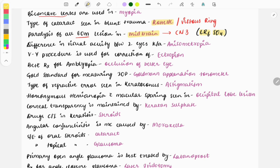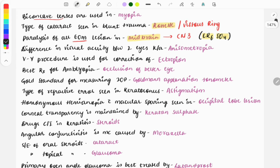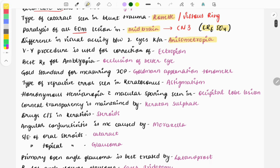You need to remember this mnemonic LR6-SO4, and it will help you solve almost all questions related to extraocular muscles. The difference in visual acuity between two eyes is known as anisometropia.